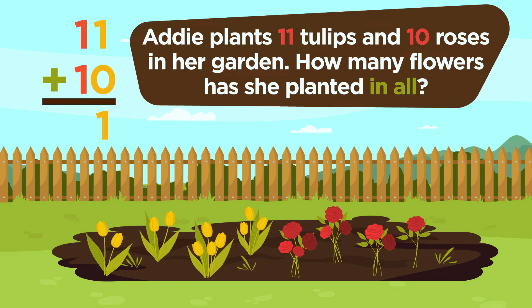Next, add in the tens column. 1 plus 1 equals 2. Addie planted 21 flowers in her garden in all.